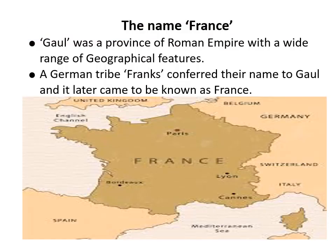Before ancient times, there was no country called France. It was a province of the Roman Empire with a wide range of geographical features. A German tribe named 'France' confirmed their name to Gaul, and it later came to be known as France. This is how France got its name.